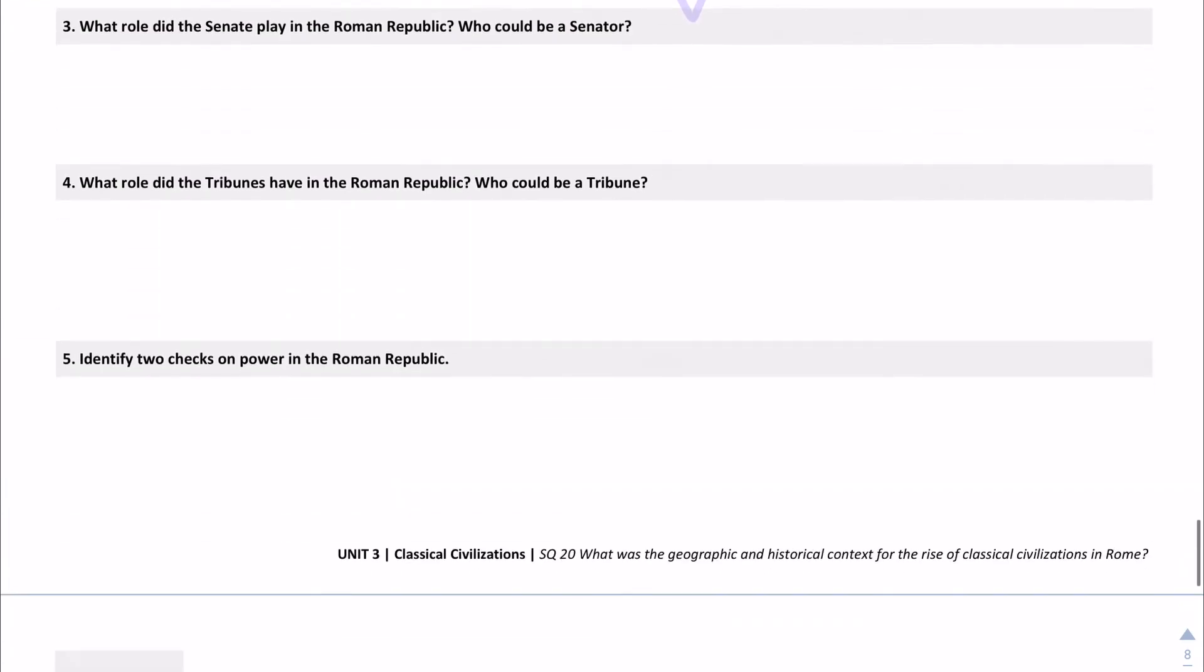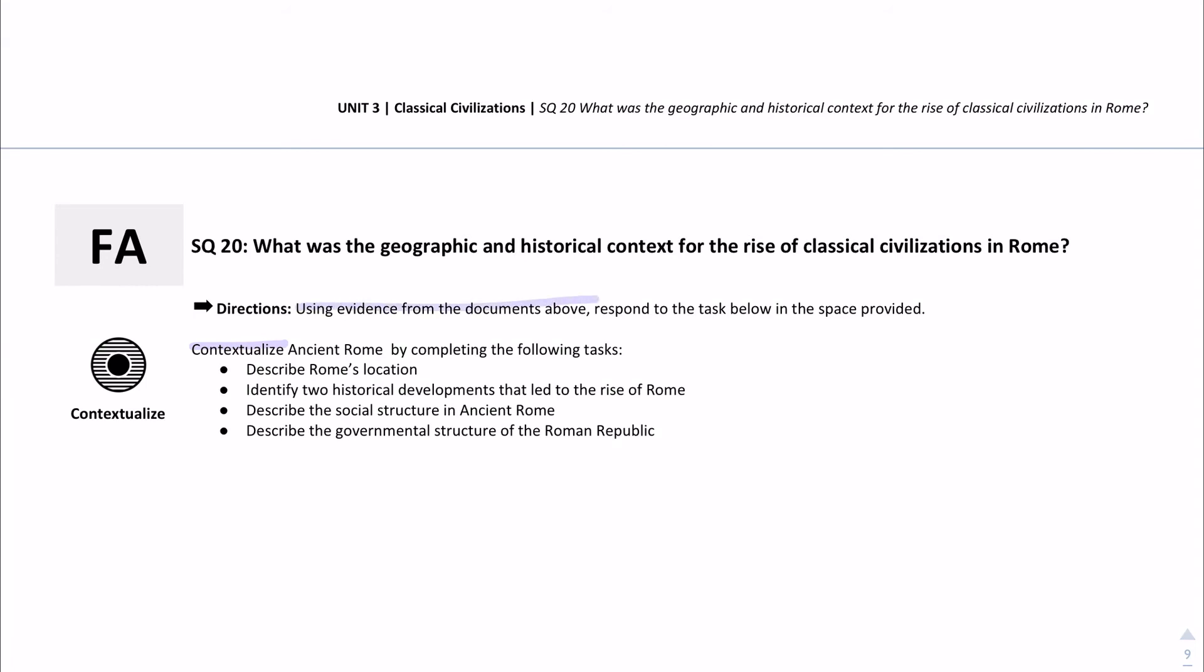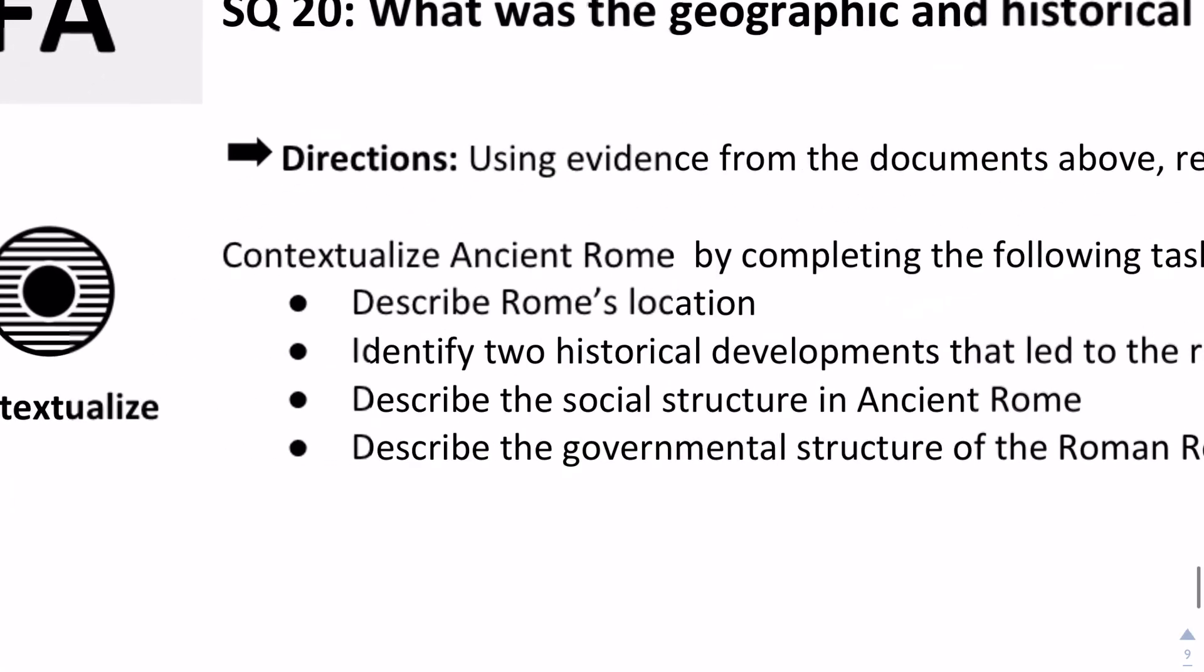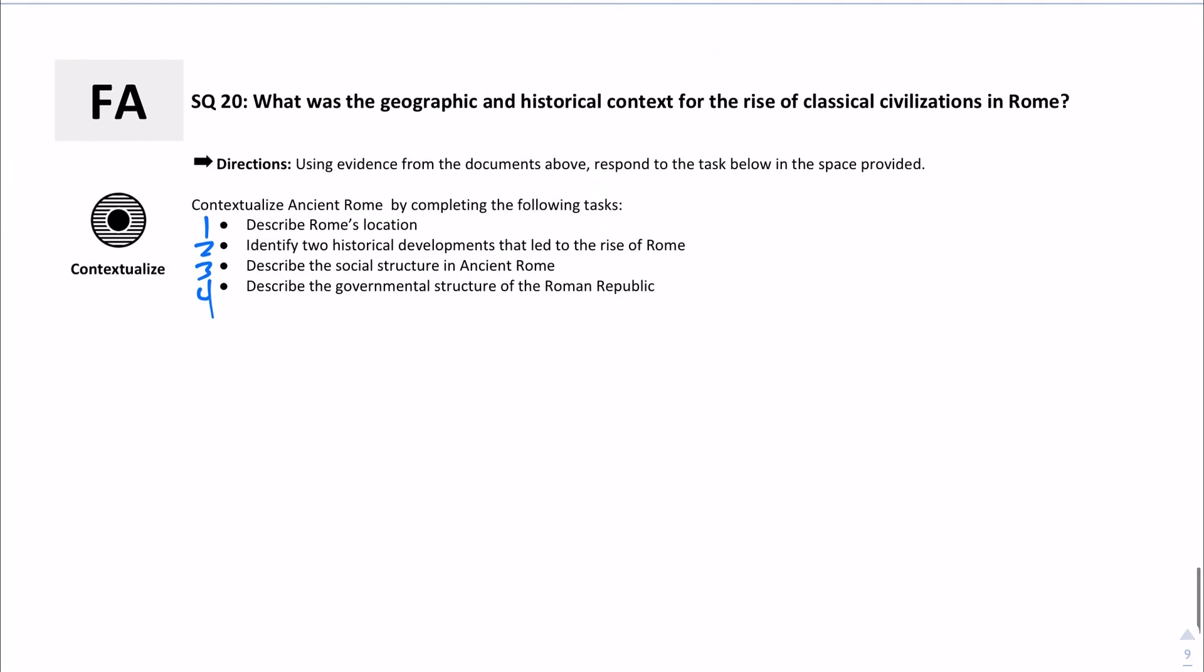Once you do that, you're going to finalize. The last part says contextualize, remember we talked about this the other day, which was putting things in context. What we're going to do is using the documents from above, you're going to contextualize ancient Rome by completing the following tasks. I'm going to number these so you don't get mixed up here. This is number one, number two, number three, number four.